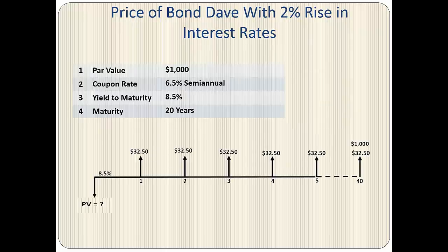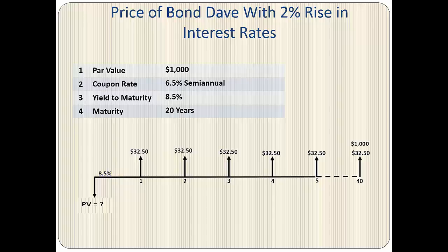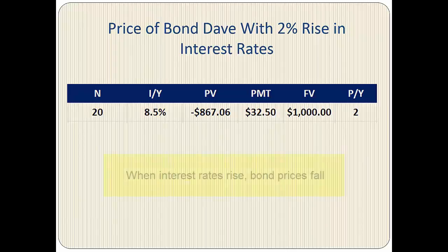Here is the timeline for bond DAVE. The par value is $1,000. The coupon payment is 6.5% of $1,000, which equals $65 annually or $32.50 semi-annually. To find the present value, we are going to discount the cash flows by 8.5%, which represents a rise in the yield to maturity of 2%. This bond matures in 20 years or 40 semi-annual periods. With the values shown in the table, we find the price of the bond to be $867.06.